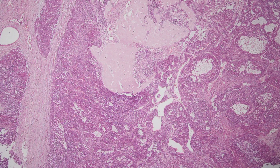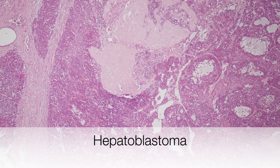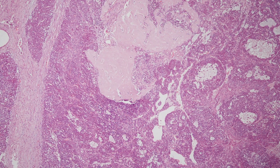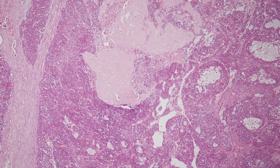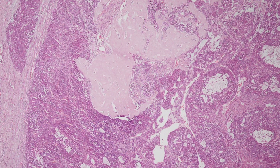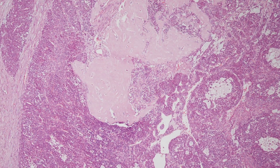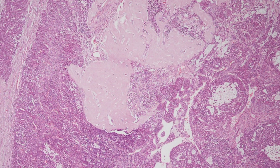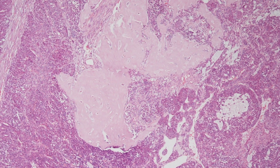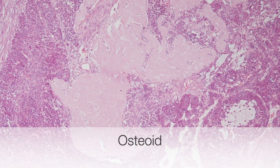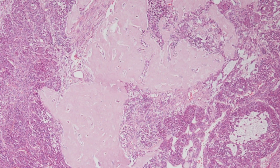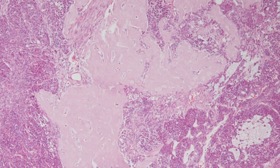This is a nice example of a hepatoblastoma with two components: an epithelial component and a mesenchymal component. Moving towards the pale pink area, this is an area of osteoid, which represents the mesenchymal component of this particular hepatoblastoma.